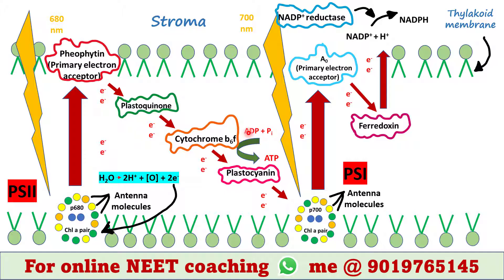When these two electrons come through cytochrome they release extra energy, which is used to generate ATP from ADP and phosphate. An electron deficiency occurs in these two chlorophyll-a molecules. To replenish that deficiency, a water molecule is broken down to yield electrons, protons, and oxygen. These two electrons enter PS2 and make the chlorophyll-a molecules electron rich.